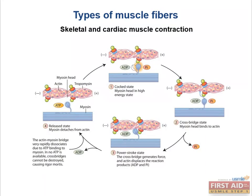What happens when calcium diffuses away? Troponin C falls back into its initial place and myosin can't find the actin site anymore. It's relaxation.